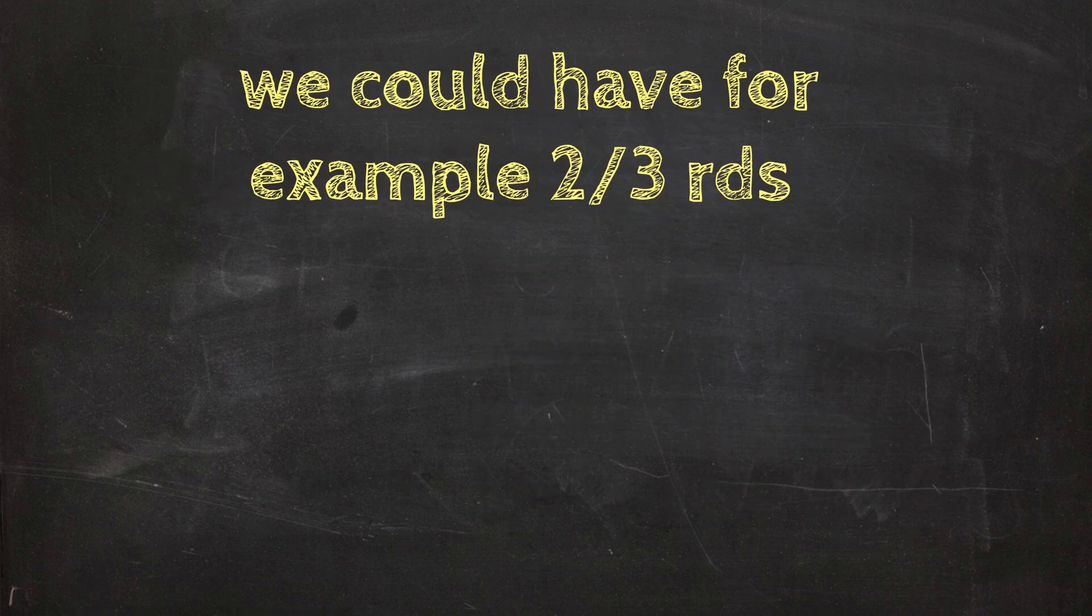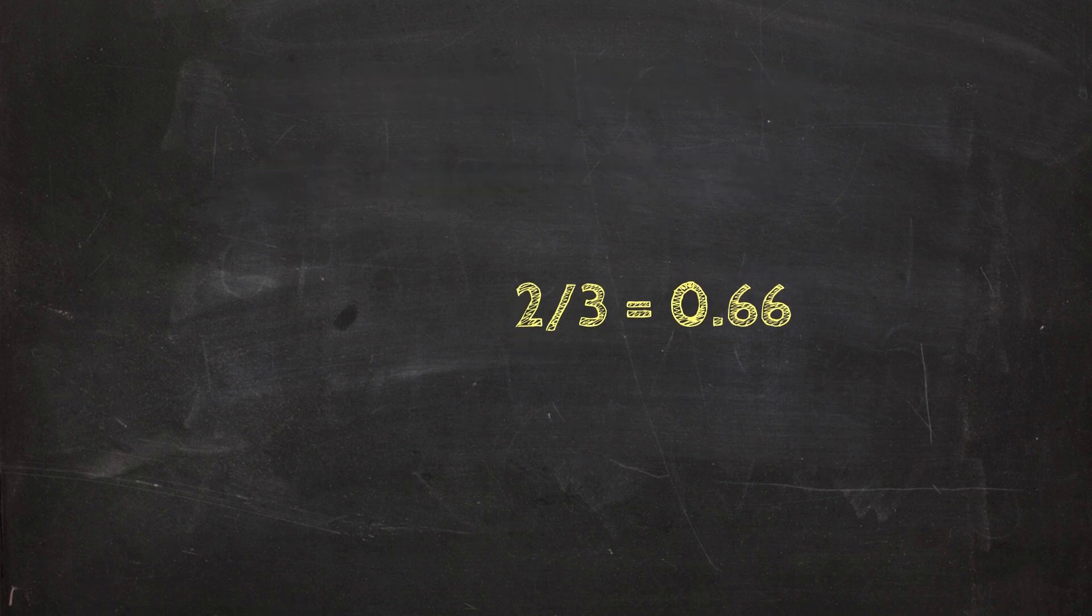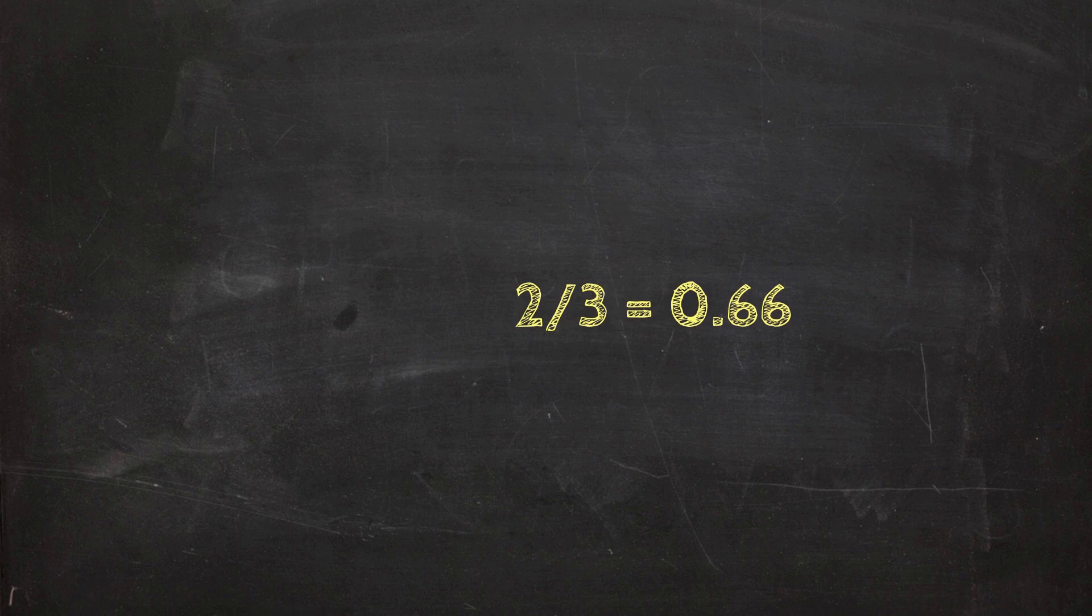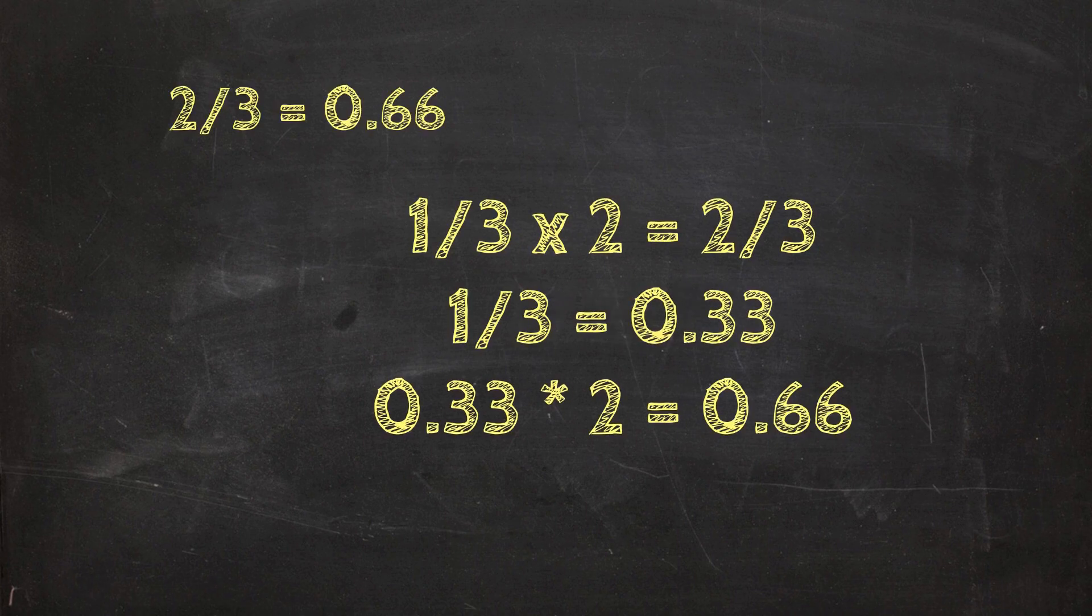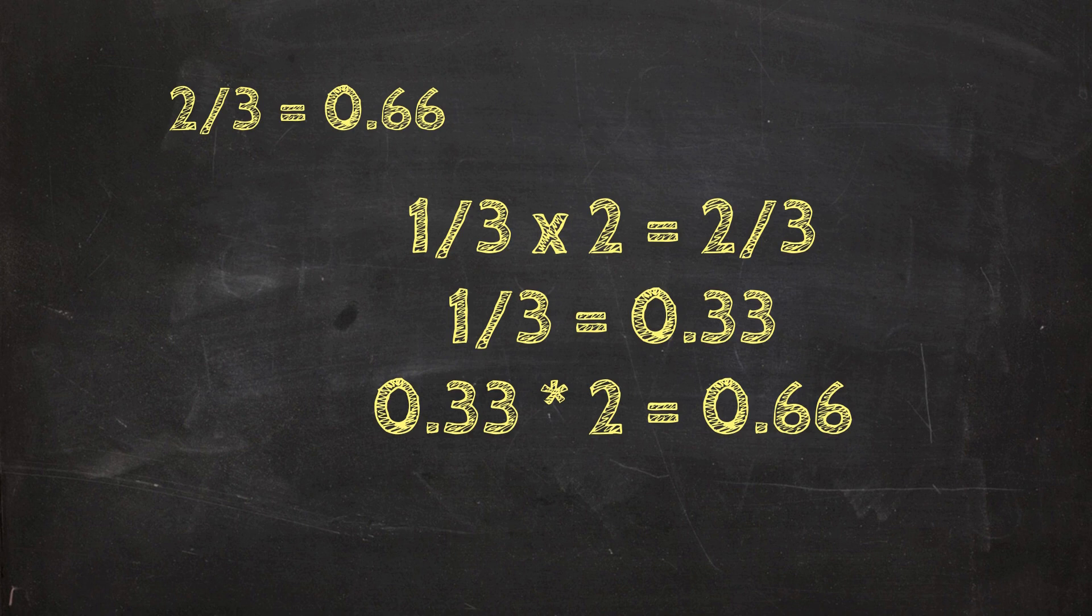Two thirds equals 0.66 as a decimal. How? Well, one third times or multiplied by two equals two thirds. So one third we know equals 0.33, so 0 or 0.33 times or multiplied by two equals 0 or 0.66.